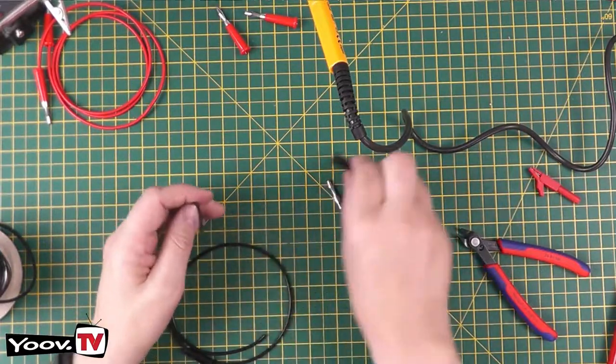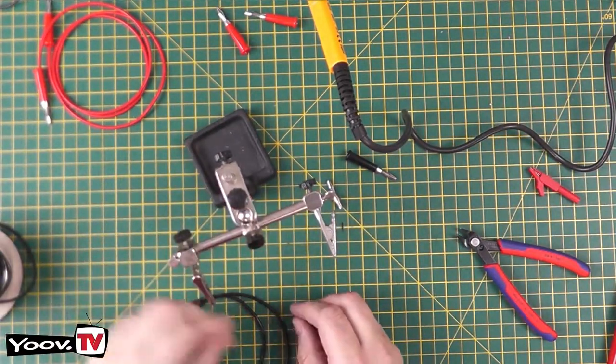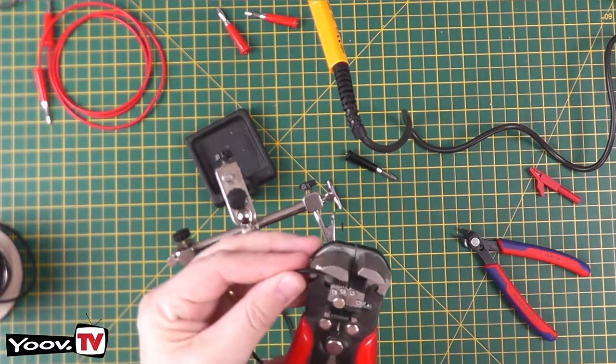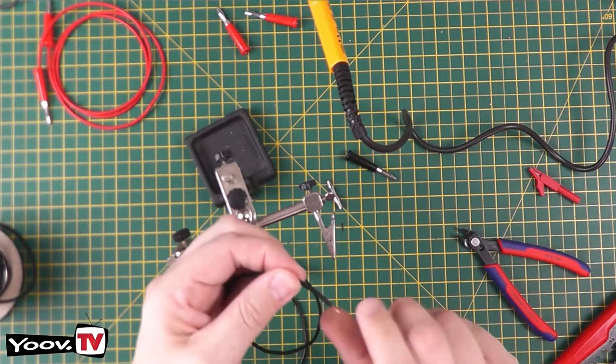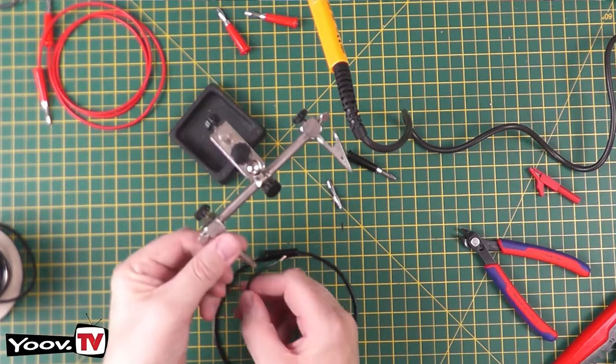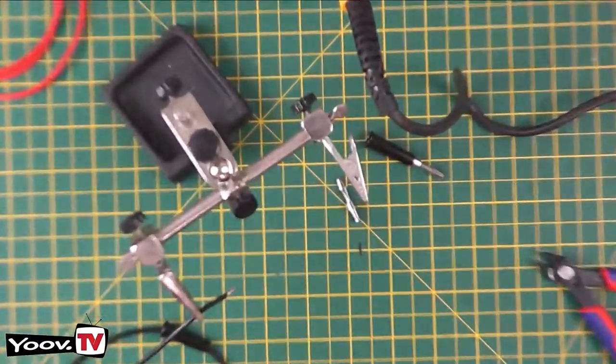So I'm going to use some little helping hands just to hold things. So if we strip off approximately a quarter inch of the wire sheath. Just twist those together. And we'll just hold that in the helping hands for the moment. Let's zoom in so we can see a bit better.